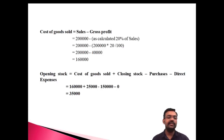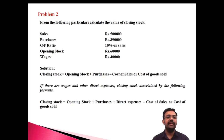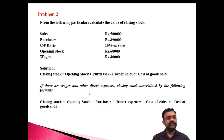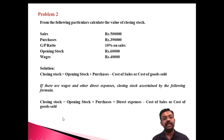Problem 2: From the following particulars, calculate the closing stock. Given: Sales = 5 lakh, Purchases = 3,90,000, Gross Profit = 10% on sales, Opening Stock = 60,000, Wages (direct expenses) = 40,000. The formula is: Closing Stock = Opening Stock + Purchases + Direct Expenses − Cost of Sales.